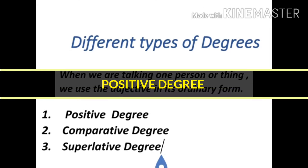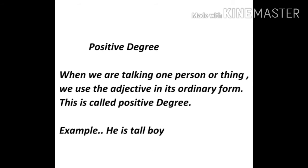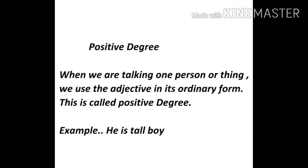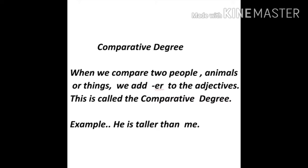Let's start with positive degree. When we are talking about one person or thing, we use the adjective in its ordinary form, and this is called the positive degree. For example: 'He is a tall boy.' In this sentence, we are talking about one person, and 'tall' is the adjective in its positive form.